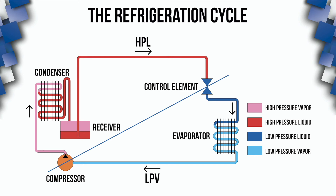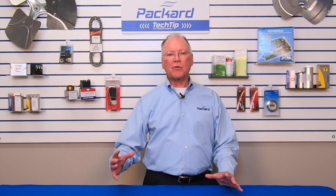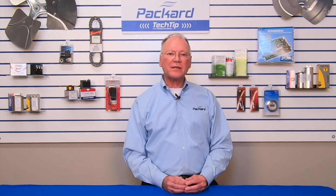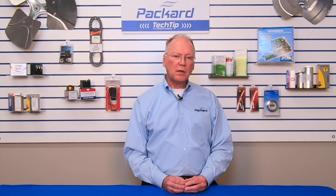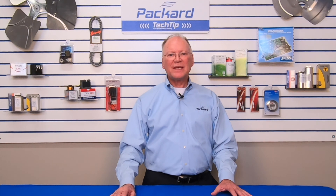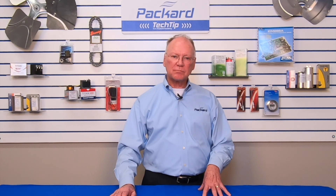As the refrigerant goes through the evaporator, it absorbs heat in the area where it's positioned. Usually that evaporator is located with your furnace — on top of the furnace, for example. Return air flows over that evaporator, and that return air from your house is hotter than what you would like. That hot air is absorbed by the refrigerant inside the evaporator. While the refrigerant is flowing through the evaporator, it is changed back to a vapor and returns to the compressor. That's the refrigeration cycle.